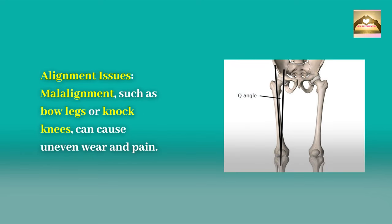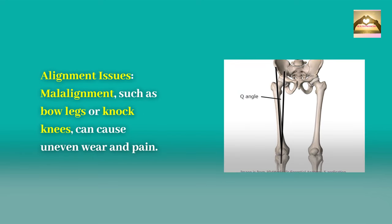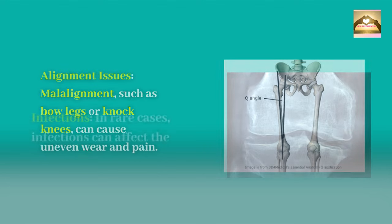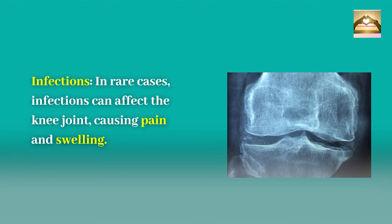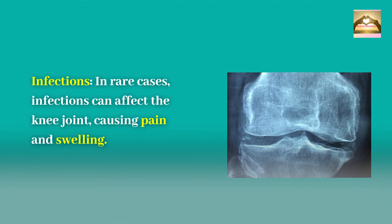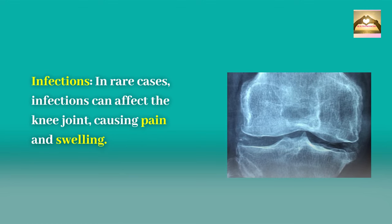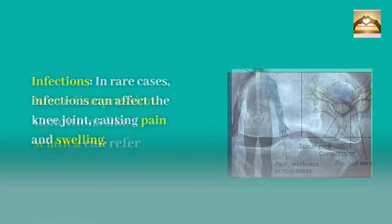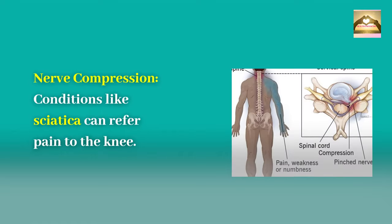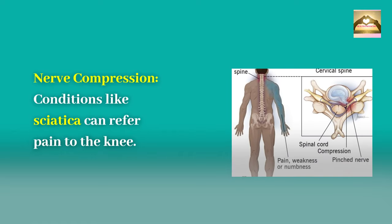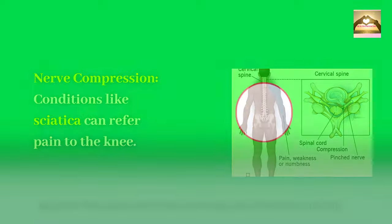Alignment issues: malalignment, such as bow legs or knock knees, can cause uneven wear and pain. Infections: in rare cases, infections can affect the knee joint, causing pain and swelling. Nerve compression: conditions like sciatica can refer pain to the knee.